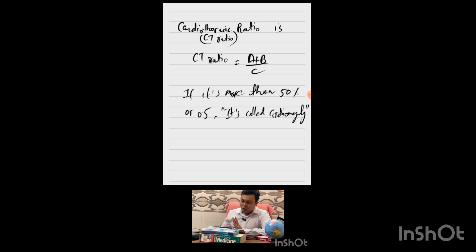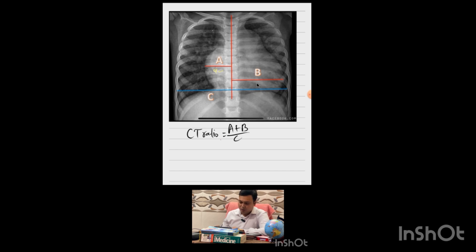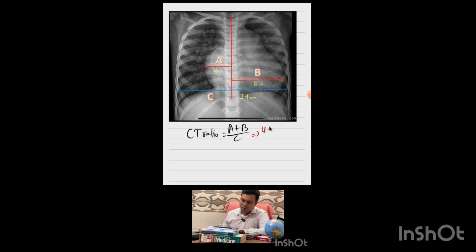The cardiothoracic ratio is (A + B) divided by C. If this is more than 0.5, it is called cardiomegaly. For example: A = 4 cm, B = 8 cm, C = 24 cm. So (4 + 8) / 24 = 12 / 24 = 0.5. Hence proved mathematically.